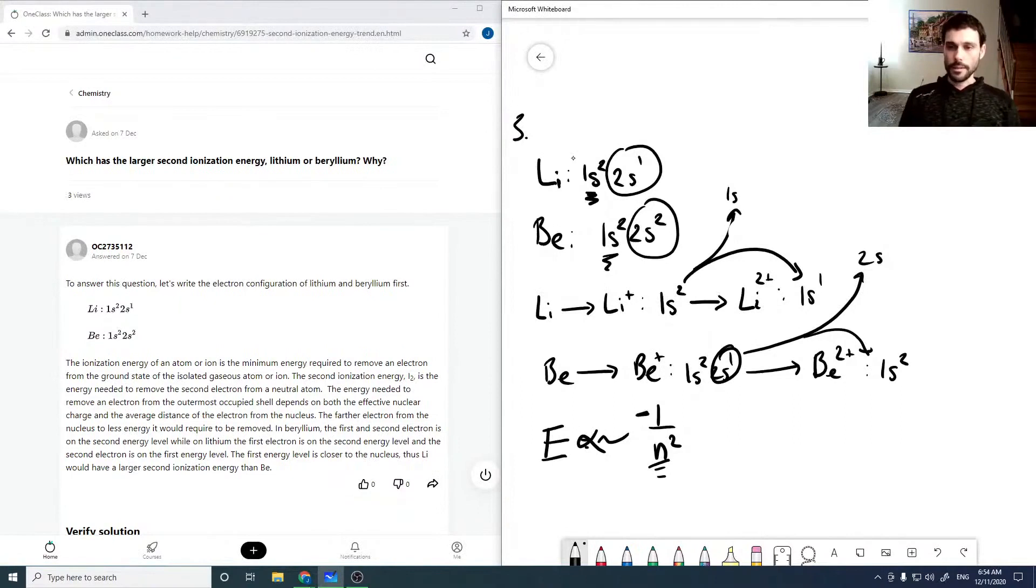That means that an n equals 2 electron, which is this, is going to be a lower energy to remove than a 1s electron. And so our beryllium plus is going to have a lower second ionization energy, which means that lithium should have the higher second ionization energy.